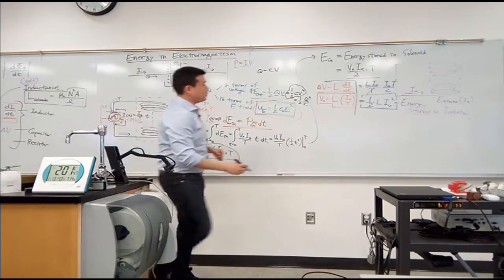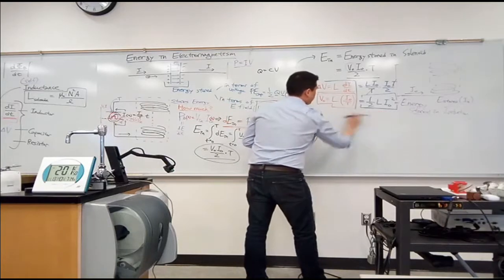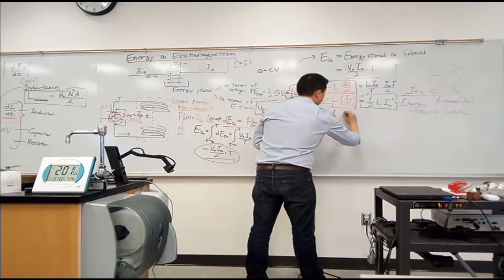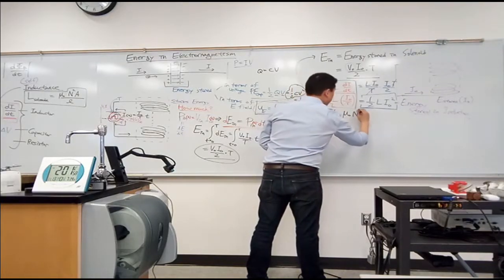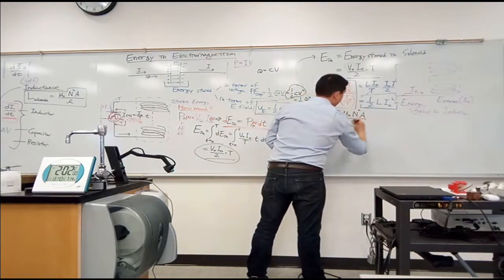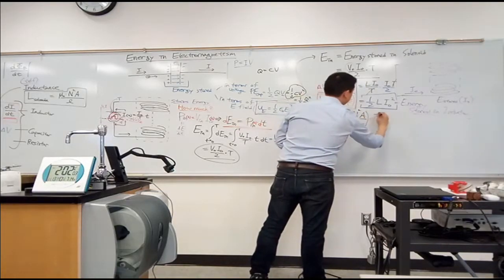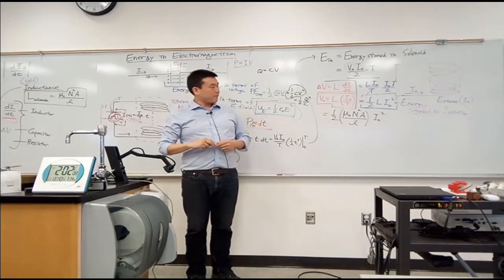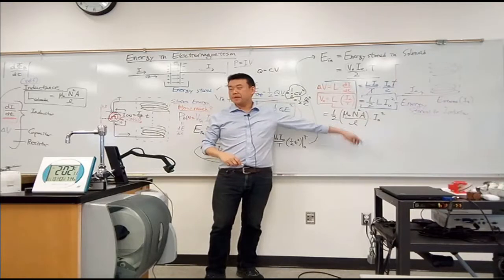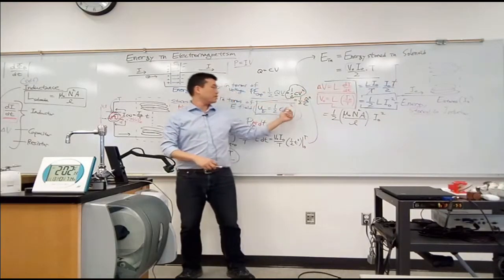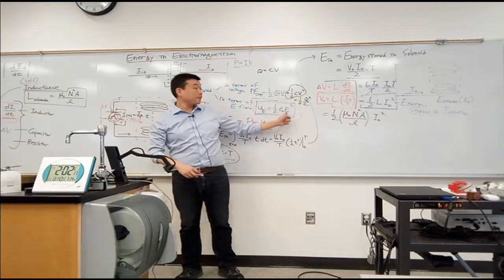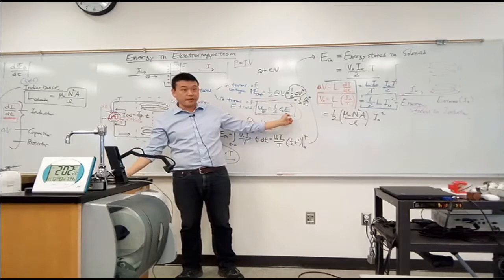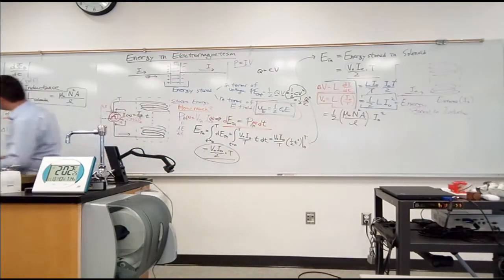The inductance of a solenoid is, plugging that in, it's equal to one-half mu-naught n squared A over L times I-naught squared. That doesn't feel like there's anything profound here. One thing I remember I had to do here was I had to rewrite voltage in terms of electric field, because electric field is the fundamental quantity I was trying to get at.